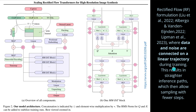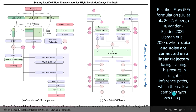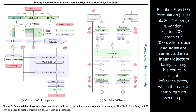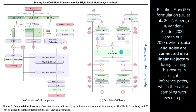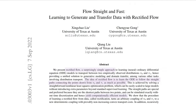This results, as the authors write, in a straighter inference path, which allows sampling with fewer steps. The architecture has separate transformer axes with one interlink, connected in a linear fashion, indicating a further simplification of the model. The first publication on rectified flow appeared in September 2022 from the University of Texas at Austin.